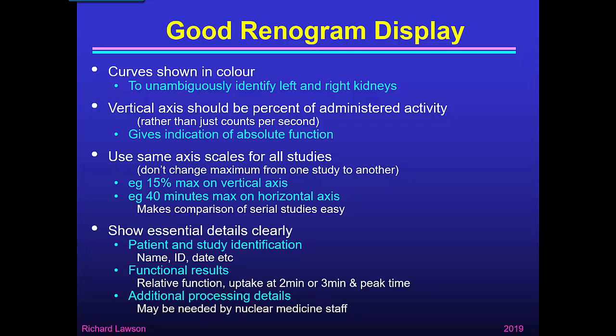It's also important to show essential details clearly. Obviously the patient name, their identification, and the date of the study should be shown, but also important functional results: the relative function of the left and right kidneys, possibly the percentage uptake under two or three minutes, and the time to peak. Additional processing details may also be needed by the nuclear medicine staff.